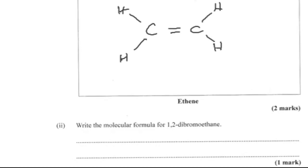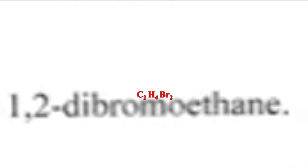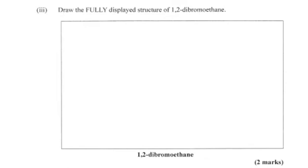For us to get 1,2-dibromoethane, it means we would have to add bromine — two atoms of bromine — across the carbon-carbon double bond, and we would end up with a saturated compound. Ethene is unsaturated; it doesn't have the maximum number of hydrogens that it can have. So adding the bromine across it makes it saturated.